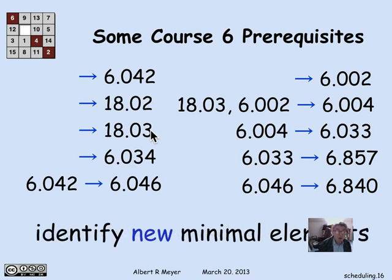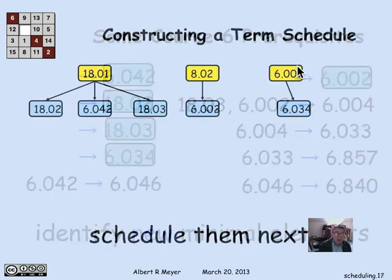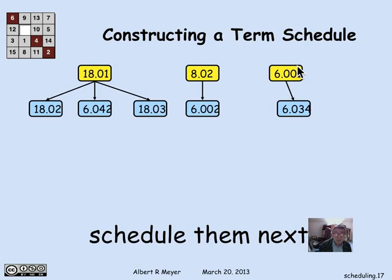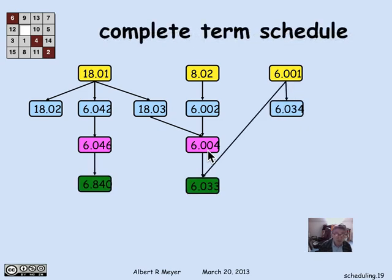In the new diagram, there are now elements that weren't minimal before but are minimal now. We can identify five such second-level minimal subjects — four in one group and one elsewhere — that now have no remaining prerequisites, and schedule them in the second term. Likewise, after deleting those, 6.046 and 6.004 become the new minimals for the third term. Then 6.840 and 6.033 go in the fourth term by the same reasoning, and 6.857 in the fifth term. That gives us a complete five-term schedule using this greedy approach.